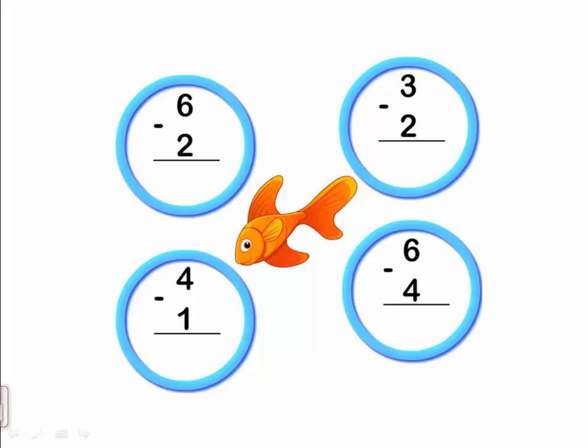Four minus one. Which one is the smaller? The smaller number is one. Let's count after one till four. After one: two, three, four. How many are left? Three. Four minus one equals three.